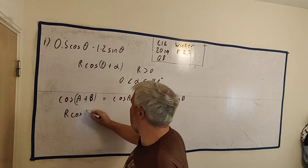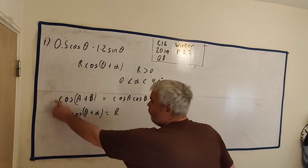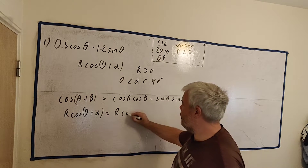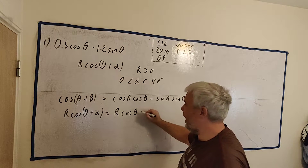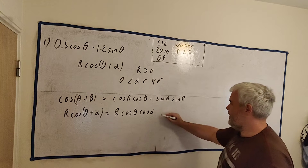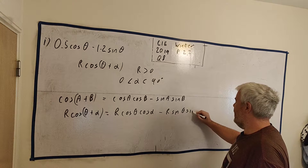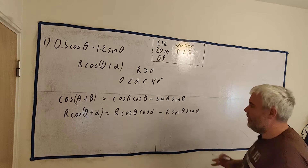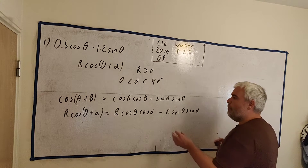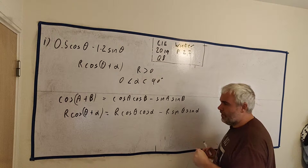So let's apply this formula here. r·cos(θ + α) is equal to r times cosine α times cosine θ, minus r times sine α times sine θ. That might not look like it's done you any favors, but this looks very similar to our original expression now.